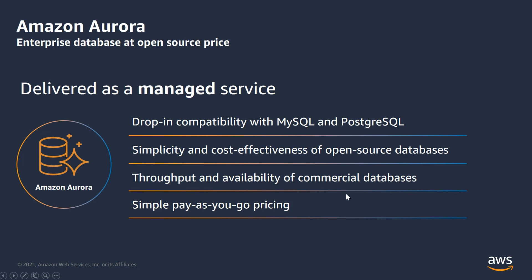Amazon Aurora is a cloud-native enterprise database that gives you the performance and availability of commercial databases. It is compatible with MySQL and PostgreSQL database engines, and it operates with the simplicity and cost-effectiveness of open-source databases. There is no cost to manage database licenses, and Amazon Aurora is a managed database service with a very simple vCPU pricing model.